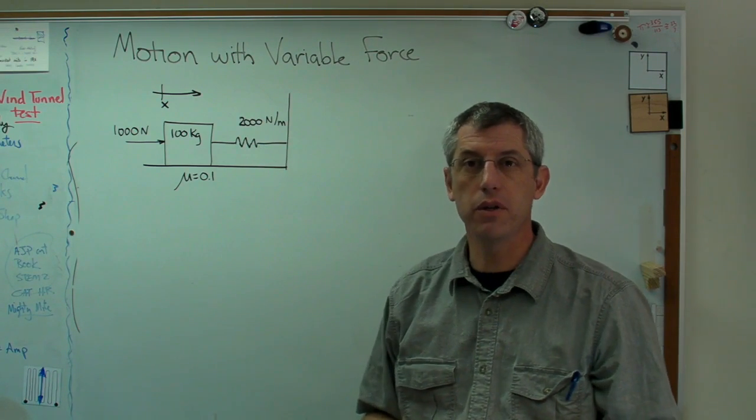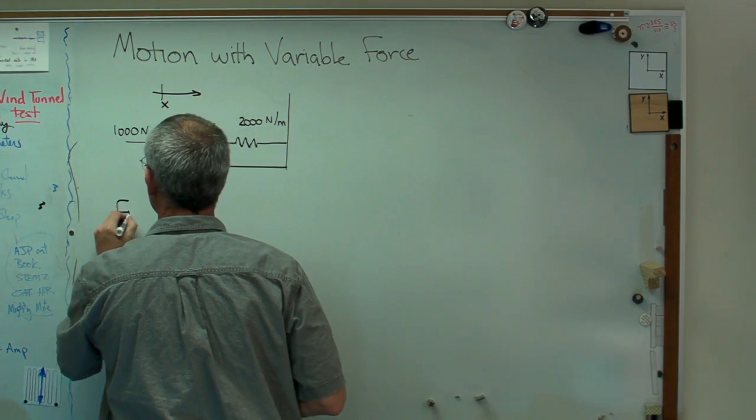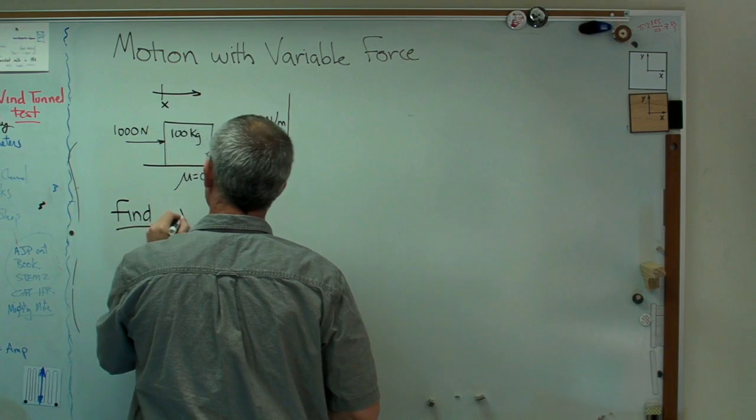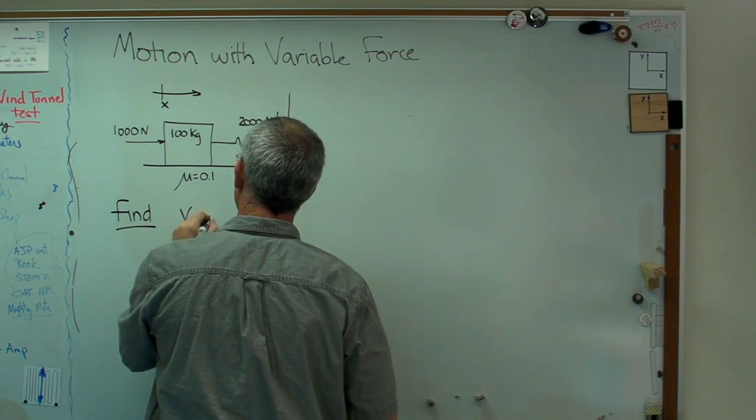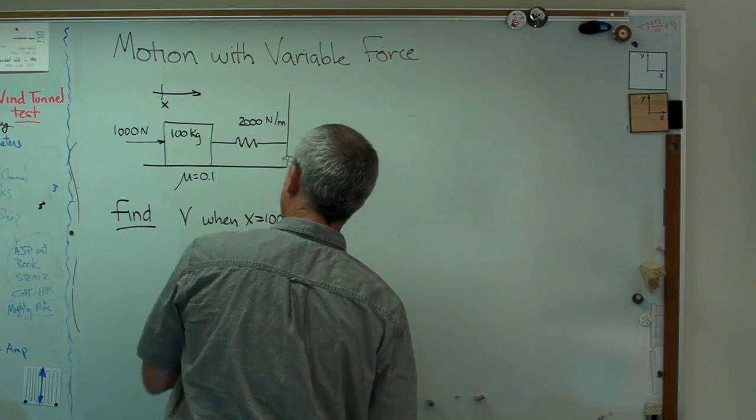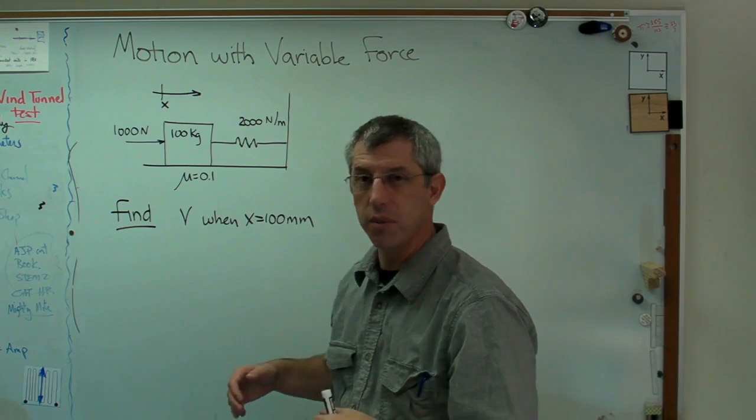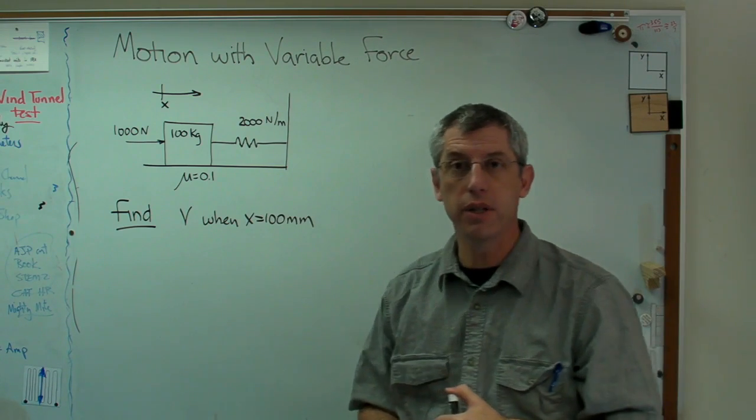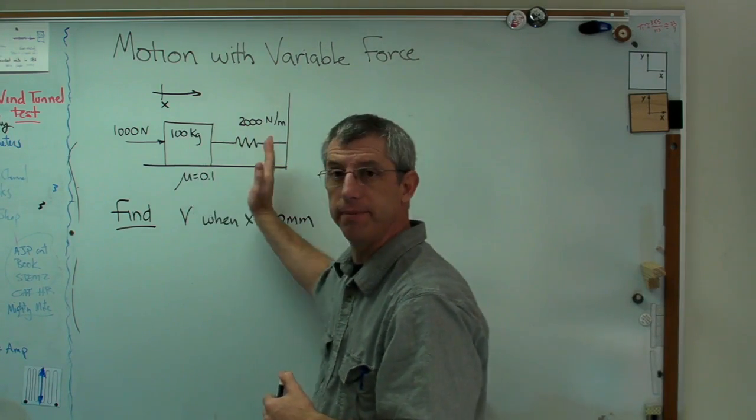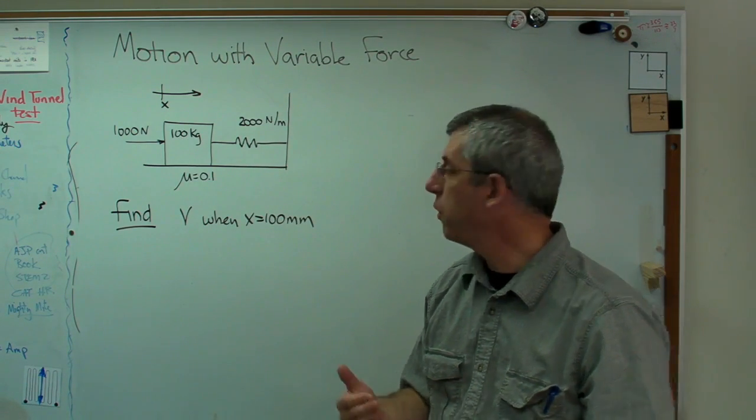Well we're going to solve this the way we normally solve this. Let's start by figuring out what it is we're trying to learn. And the problem states find v when x equals 100 millimeters. Normally you're looking for velocity at some point in time with these sorts of problems. But here we want to know the velocity when we're at some displacement. And that's not very hard. We'll start with Newton's law like we always do. We'll work through it.